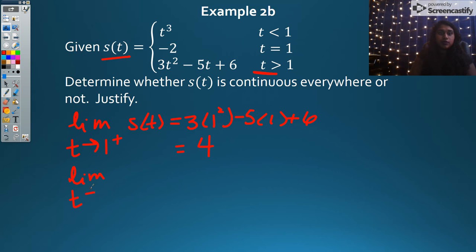The limit as t approaches one from the left of s(t). From the left, that's one cubed, which is simply one. If the limit from the left and the limit from the right don't equal each other, that means my limit at that point does not exist.